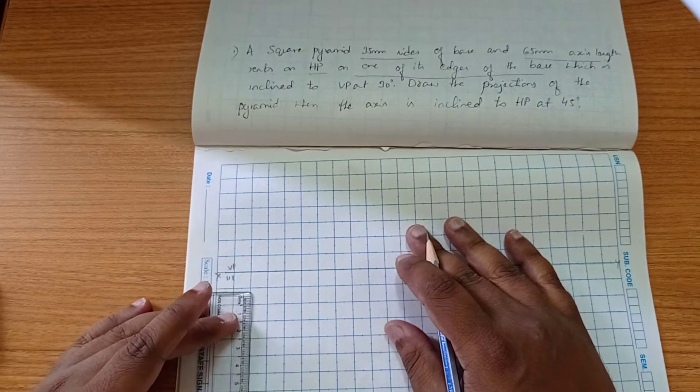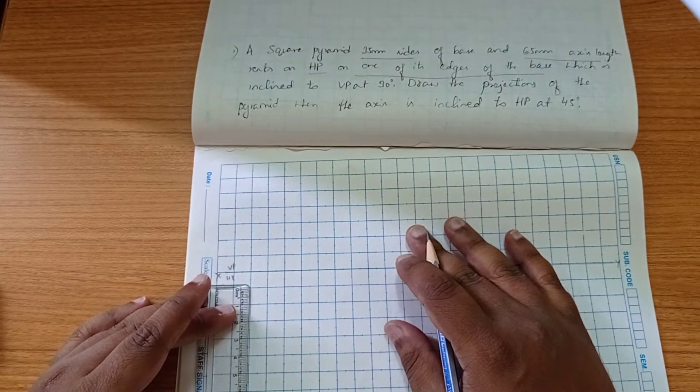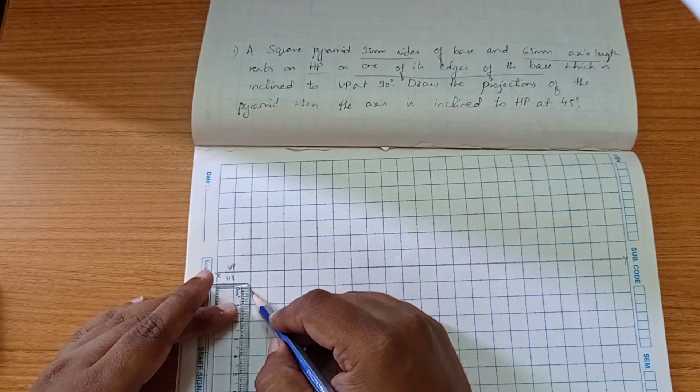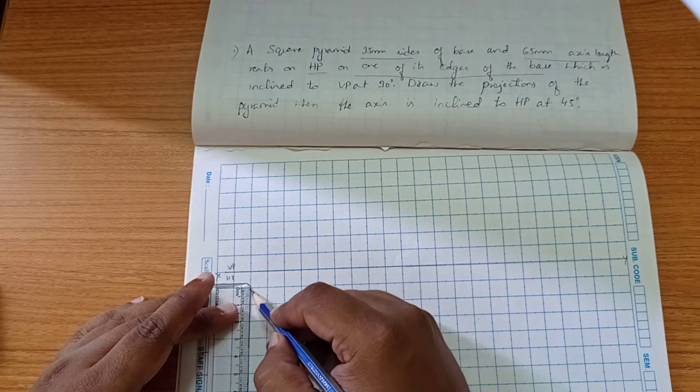For a square of dimension 35, we have to mark 35mm, that's three and a half boxes here.